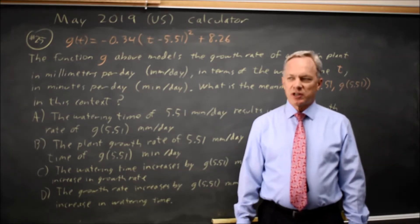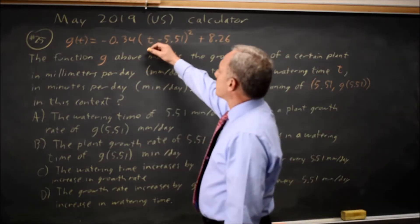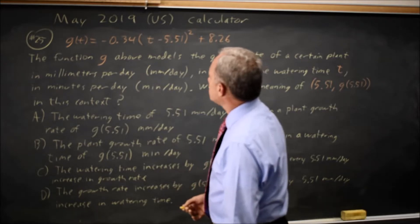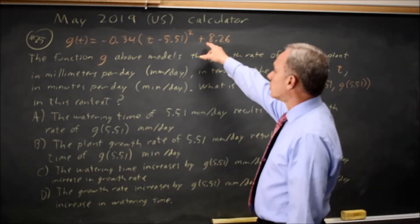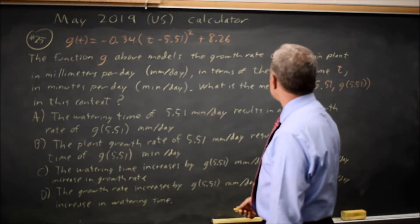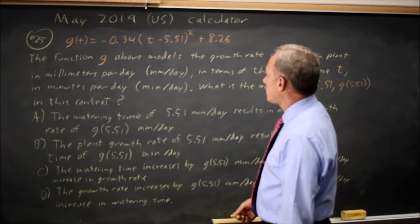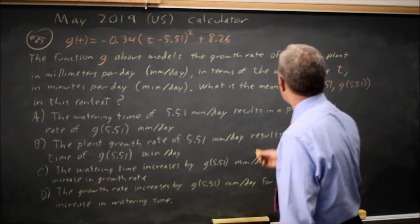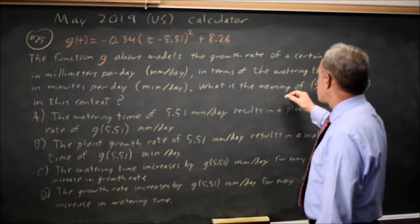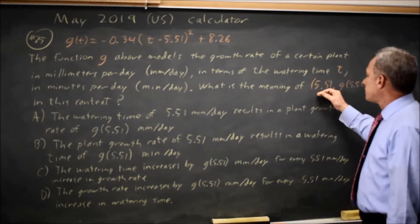This is calculator question number 25. We have a quadratic equation for g of t in vertex form. The function g models the growth rate of a certain plant in millimeters per day in terms of the watering time t in minutes per day. They ask for the meaning of the vertex.